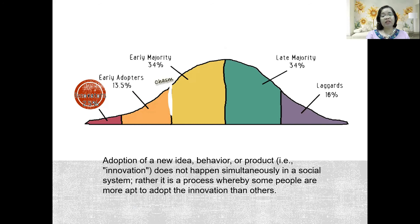Some of those factors can be in the production itself. For example, the Betamax came out earlier than the VHS — these were the first ways of watching videos outside cable TV and movie houses. Why was the Betamax short-lived? Because the VHS, which was an American production, had Hollywood support, while the Betamax, which was a Japanese production, did not have that kind of support. And therefore, it took the back seat.